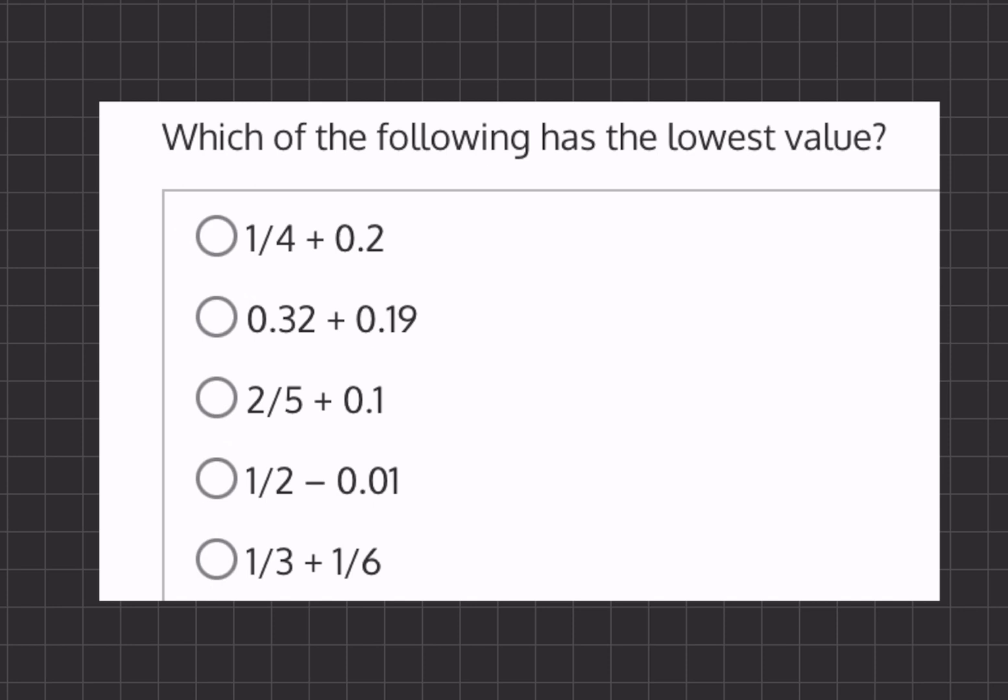So, 1/4 is like saying 0.25 in decimal form, and if we add it to 0.2, we will get 0.45. Now, let's add our second one, 0.32 plus 0.19 will give us 0.51.